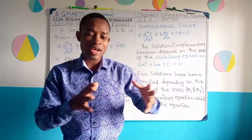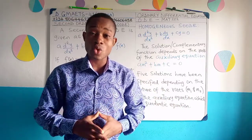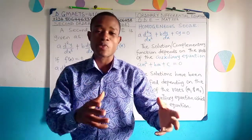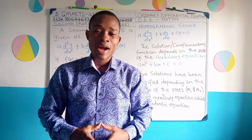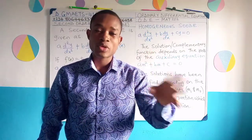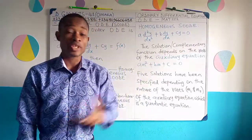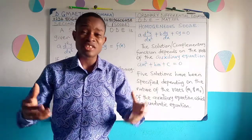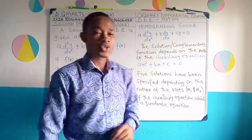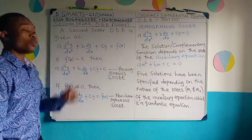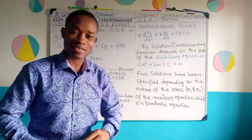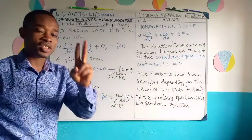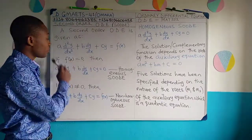Now we want to move on to the second-order ordinary differential equation, which is one in which the dependent variable — in most cases represented as y — has been differentiated twice with respect to the independent variable x. This second derivative is written as d²y/dx², showing that y has been differentiated two times with respect to x.